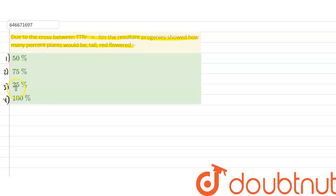All right, so here look, capital T capital T and capital T small t, they will be tall plants. And small t small t will be dwarf plant due to dominance of capital T on small t.